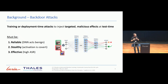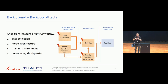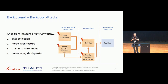For example, in the case of classification, one of the most typical uses for backdoors is to do a label flip, where we go from, let's say, a ship to a cat. Backdoor attacks arise in a lot of situations: from data collection manipulation, from model architecture manipulation, and training environment.